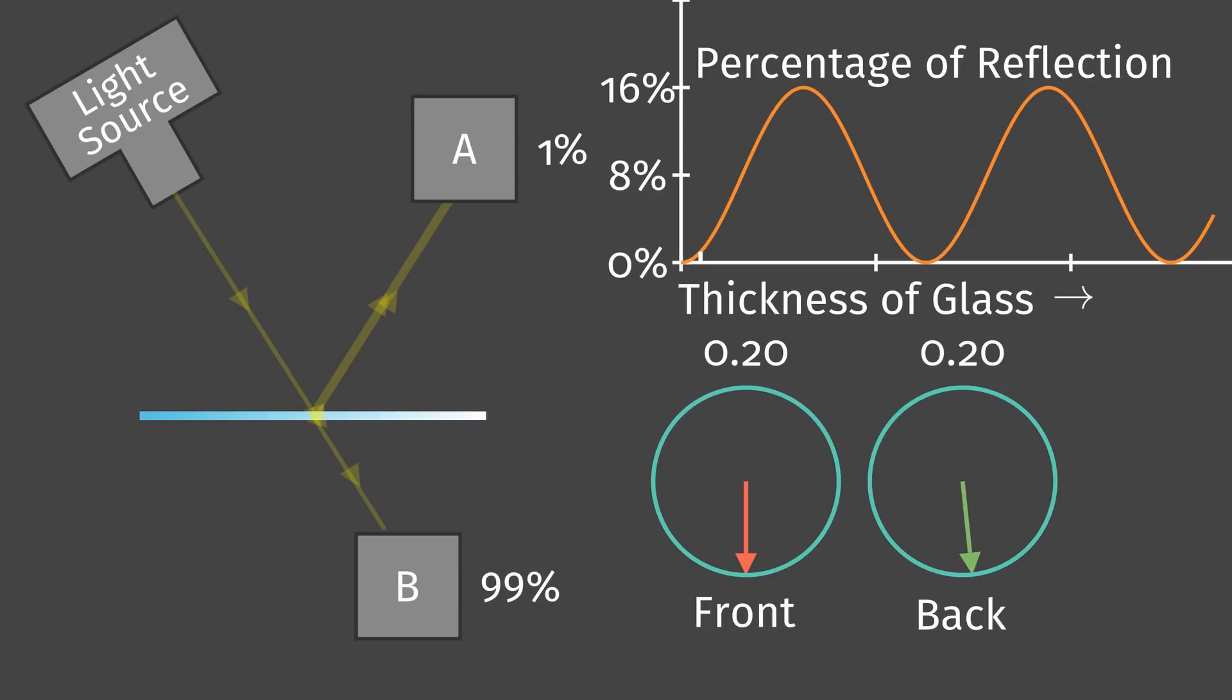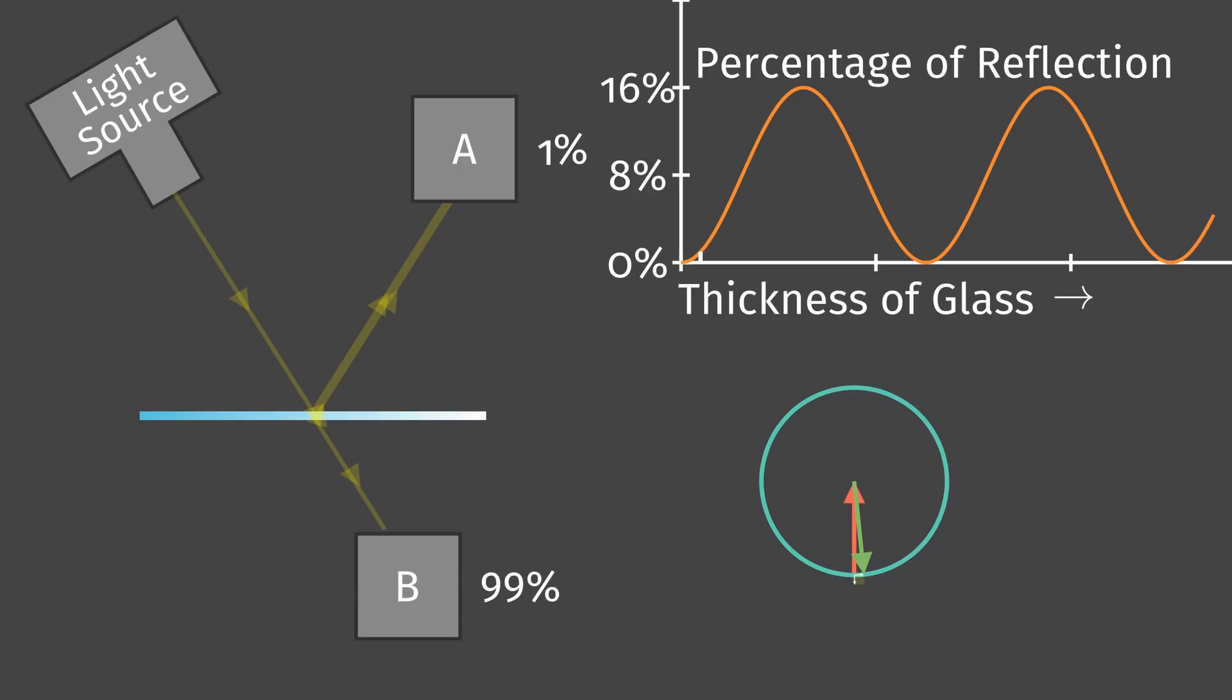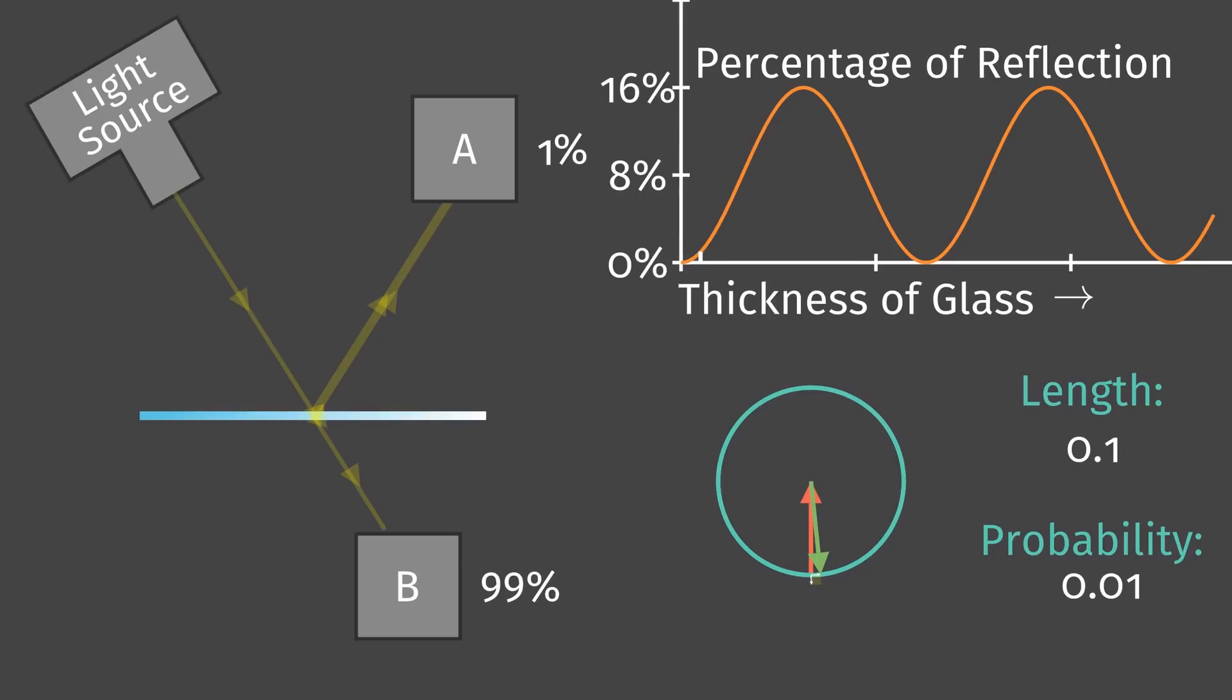We need one more rule to compute a correct answer. When we consider reflection from a front surface, that is, from air back to air, we reverse the direction of the arrow. Now, we combine the two arrows. The final arrow has a length of nearly 0, since the two arrows cancel each other out. Thus, the probability of light reflecting from a very thin layer of glass is effectively near 0. Remember, the probability is the square of the final arrow's length.